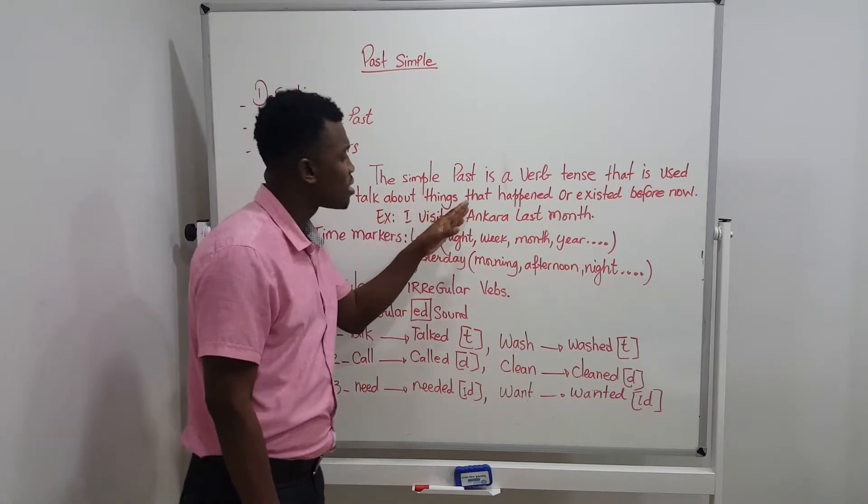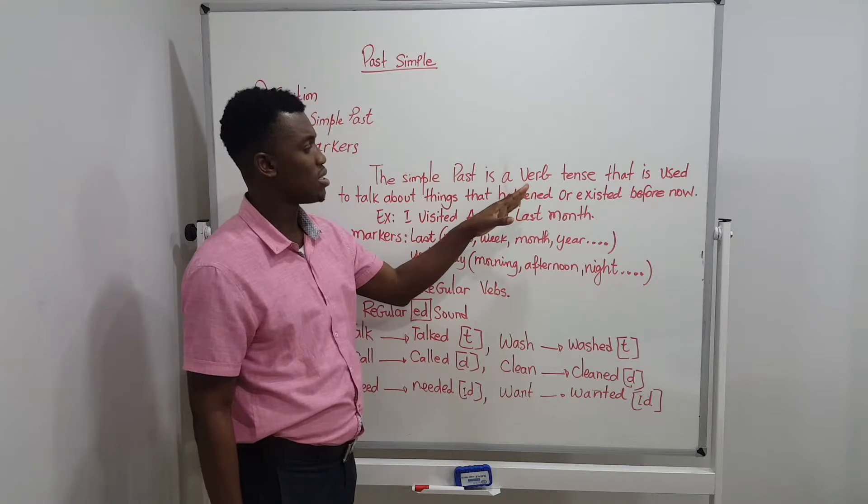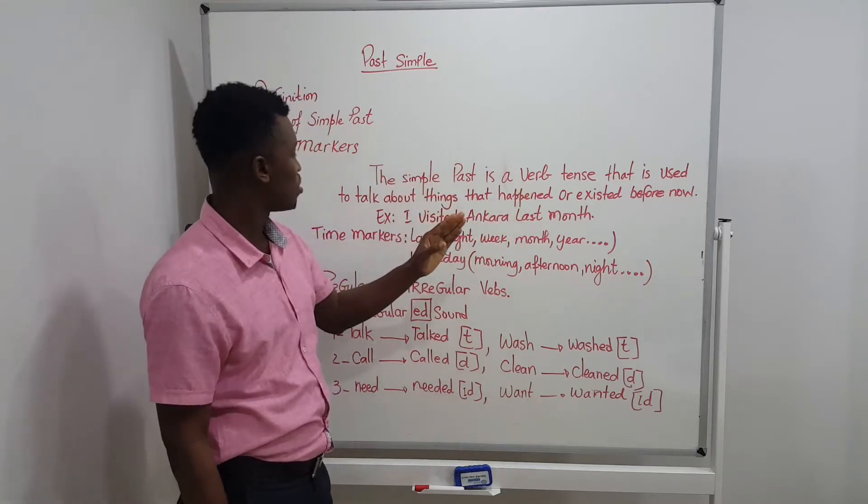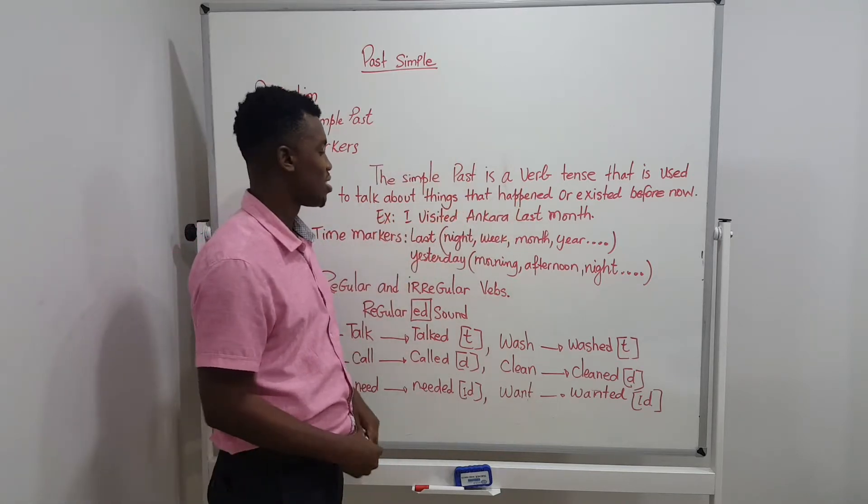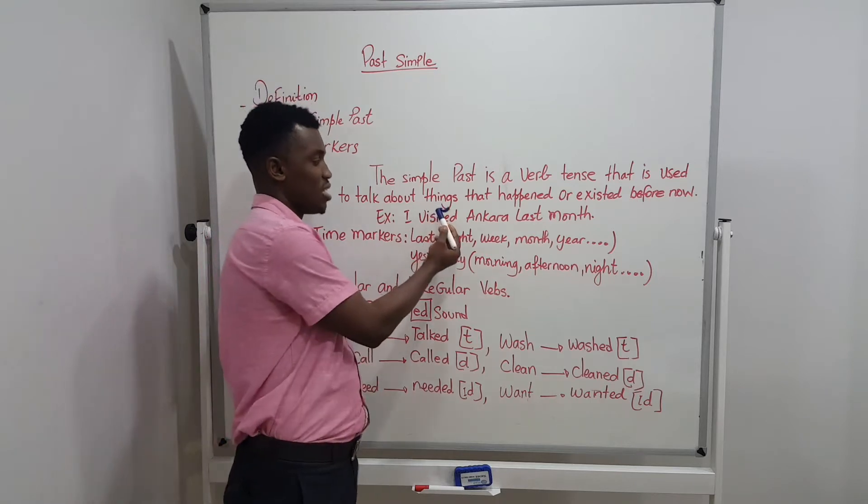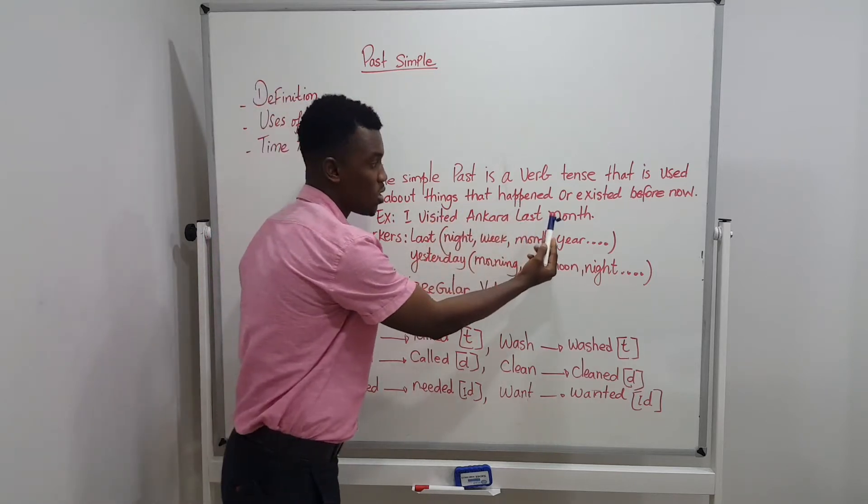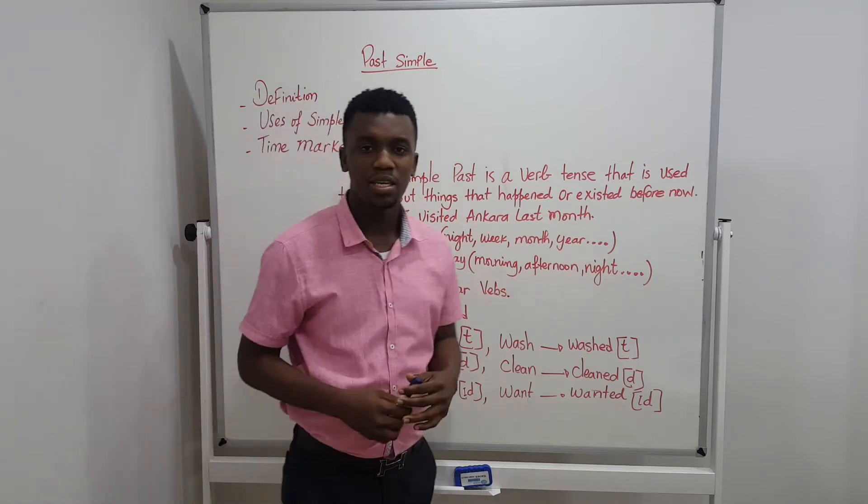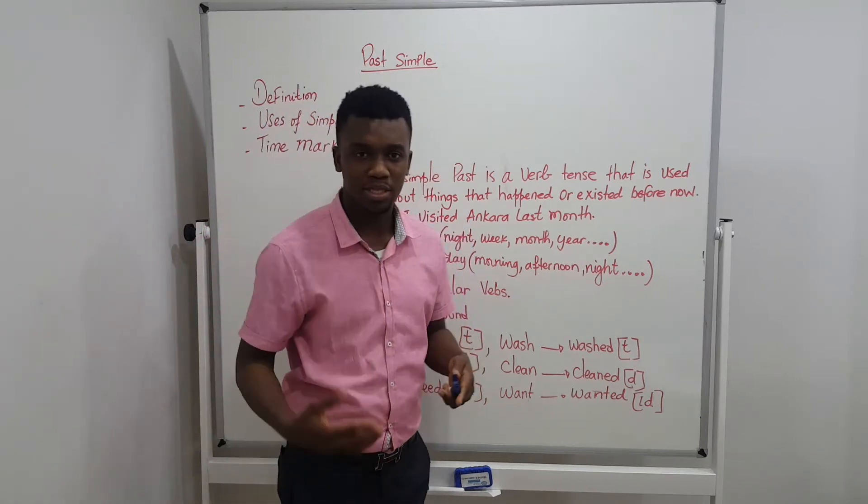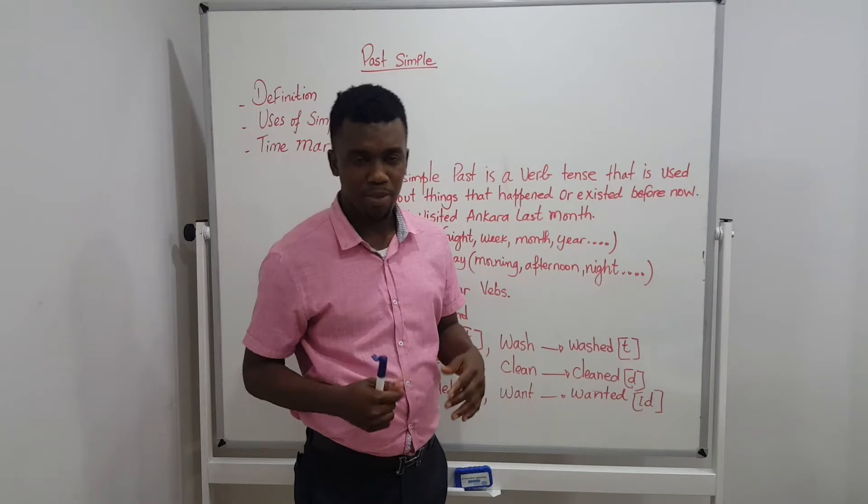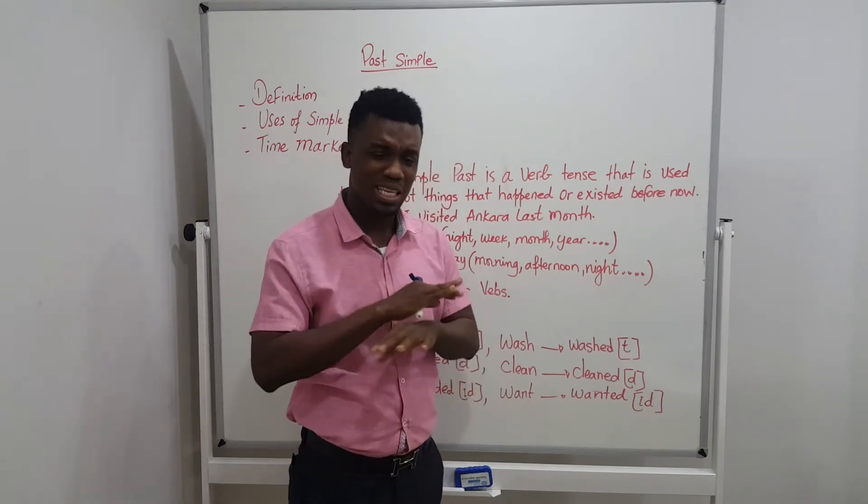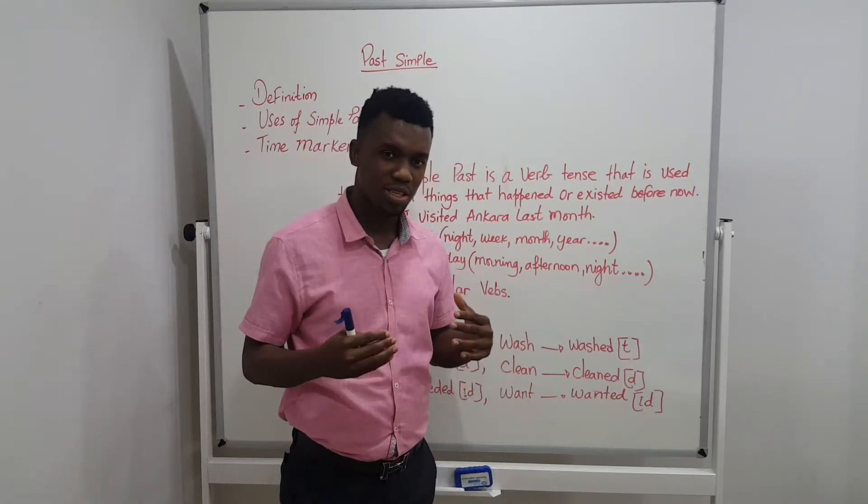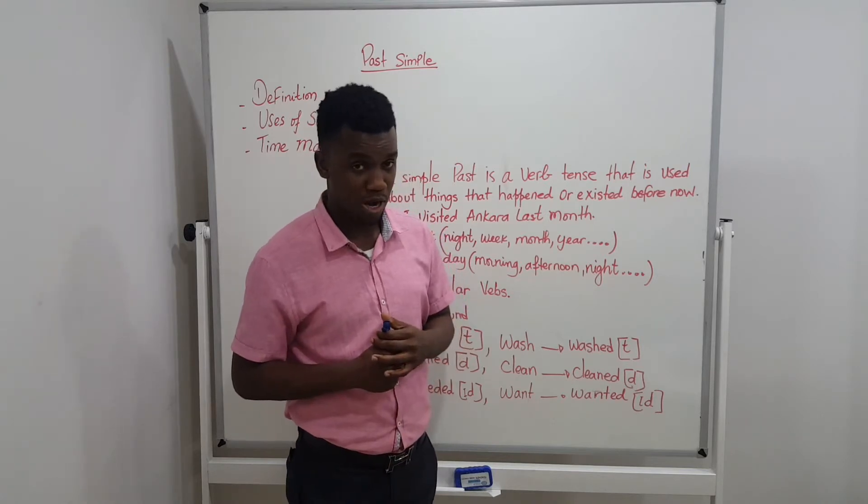The simple past is a verb tense that is used to talk about things that happened or existed before now. Or I can say, we use past tense to talk about something that is completely finished in the past.